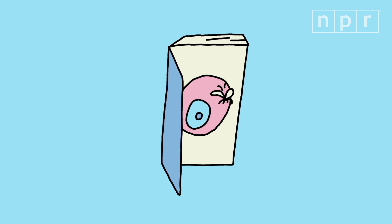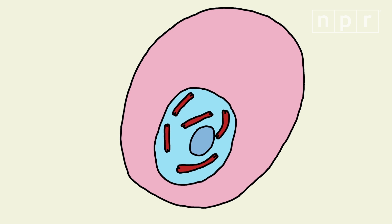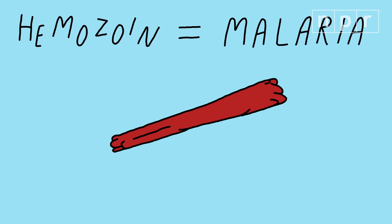So we read up on malaria and learned about this compound called hemozoin. The malaria parasite releases it after eating red blood cells. Basically, if you have hemozoin, you have malaria.